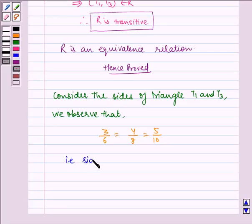That is, the sides are proportional, which implies T1 and T3 are similar.